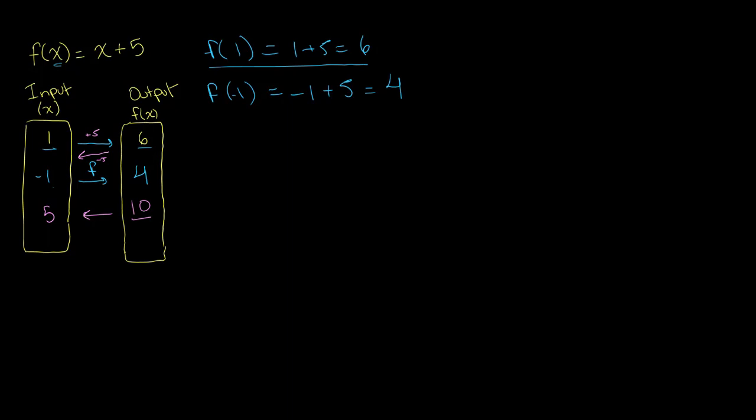This operation—this subtraction of 5—can be referred to as the inverse function. It's basically the inverse or opposite of the function. We perform our normal function to get from input to output, and we perform our inverse function to get back from output to input.